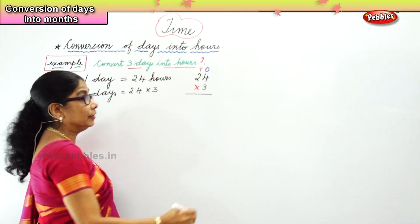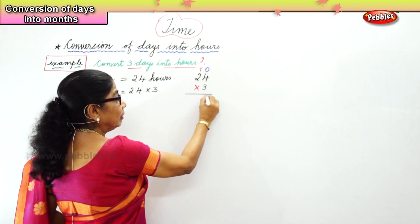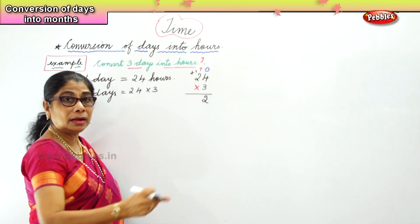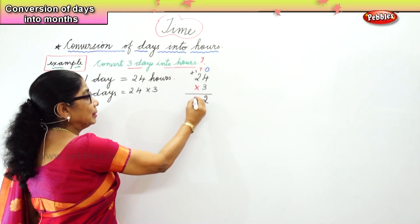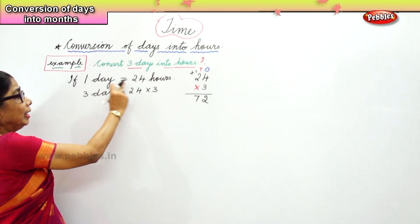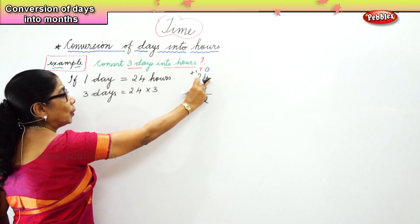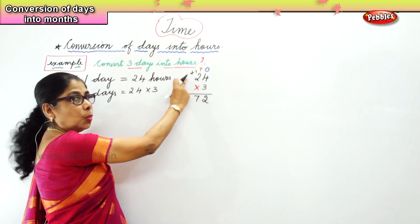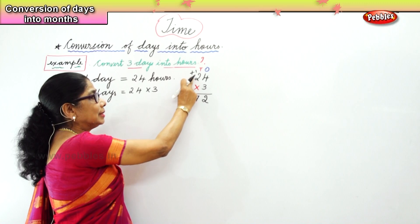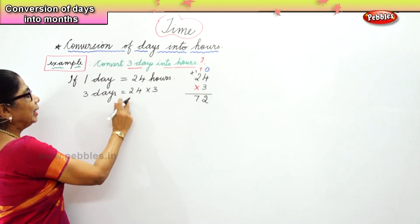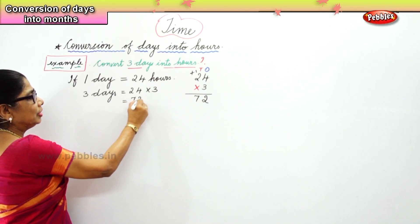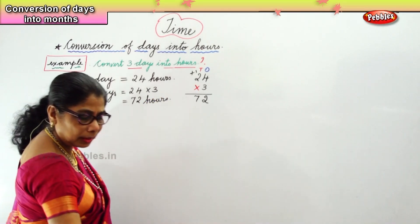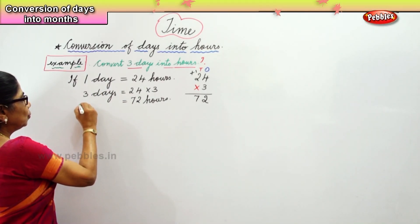Four into three gives you twelve. Four threes are twelve. You put two here and carry one to the tens place. Three twos are six, plus one, gives seven. So the answer: one day is twenty-four hours, three days is twenty-four into three, that gives us seventy-two. Four threes are twelve, carry over one to the tens place. Three twos are six plus one is seven. So three days is equal to seventy-two hours.